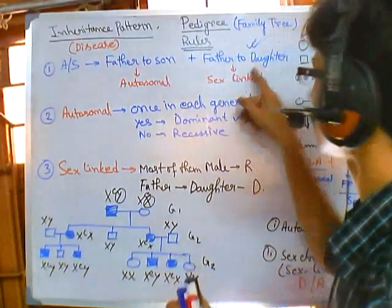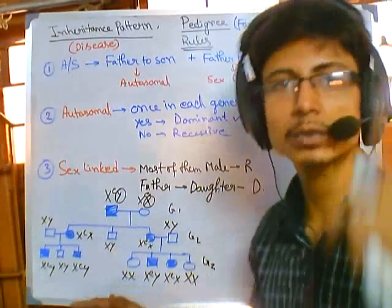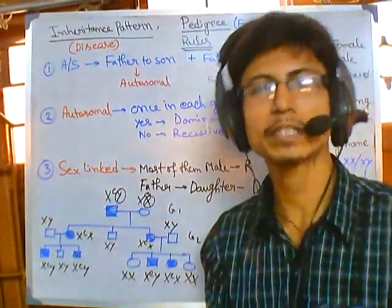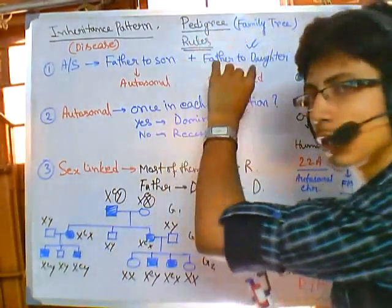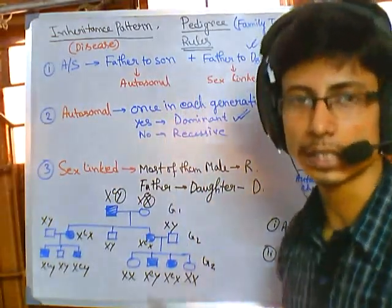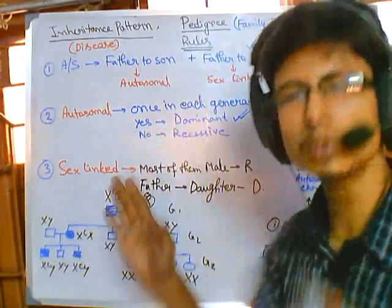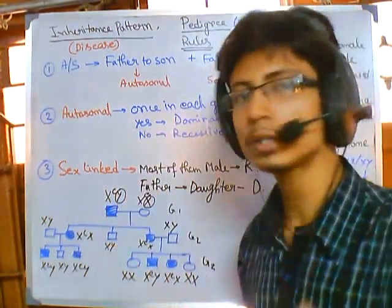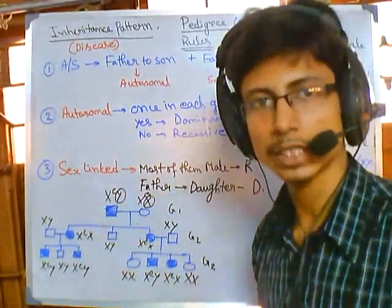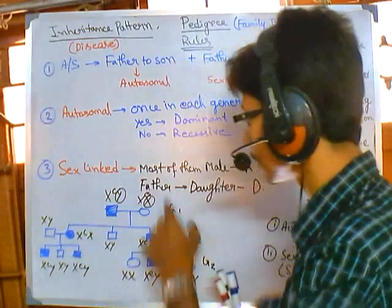The most important formulas: father-to-daughter transmission tells you it's sex-linked, and if you find the trait in each generation at least once, it is dominant. These two formulas are true, so if you use them you don't need further cross-checking. But if you use other formulas, you must cross-check.